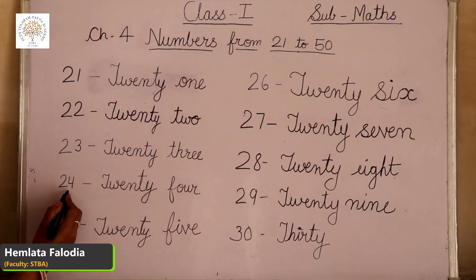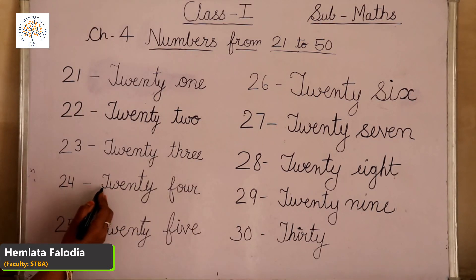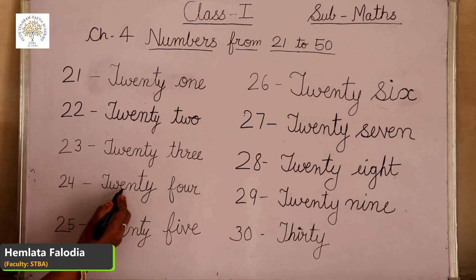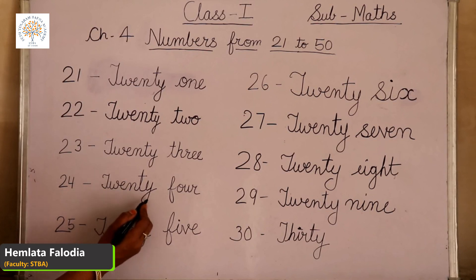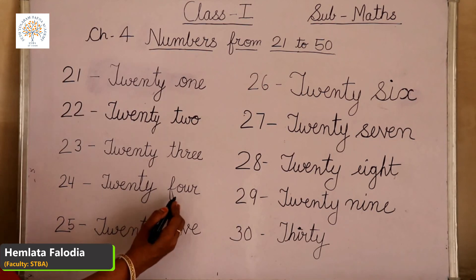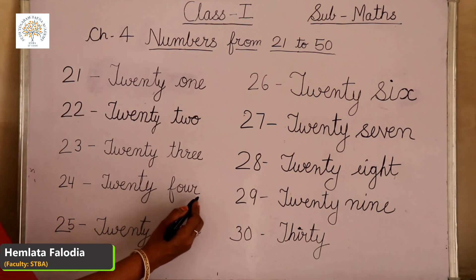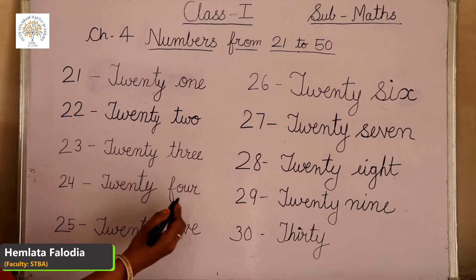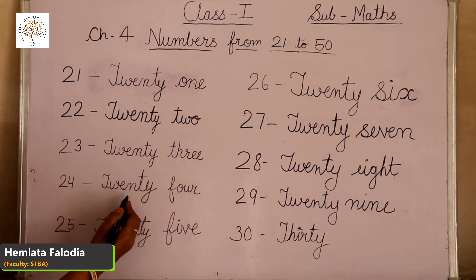Come to the next, 24. T-W-E-N-T-Y, 20 and 4. F-O-U-R, 4. This means 24.